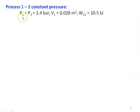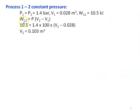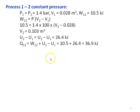For the constant pressure process, work done W = P(V2 − V1). Substituting: 10.5 = 1.4 × 100 × (V2 − 0.028), giving V2 = 0.103 m³. The change in internal energy U2 − U1 = U3 − U1 = 26.4 kJ (since U2 = U3). Applying the first law: Q12 = W12 + (U2 − U1) = 10.5 + 26.4 = 36.9 kJ.